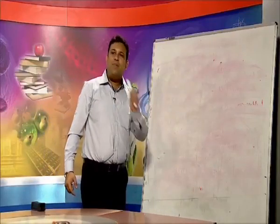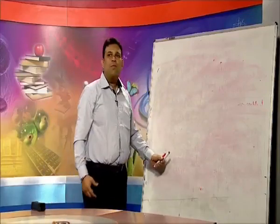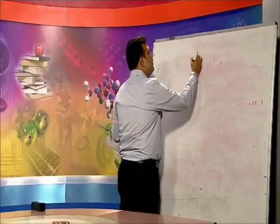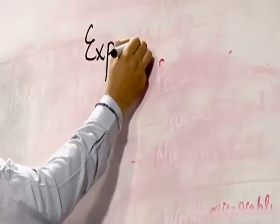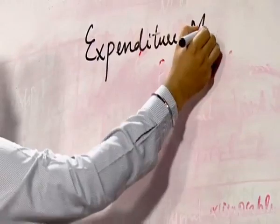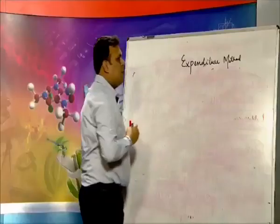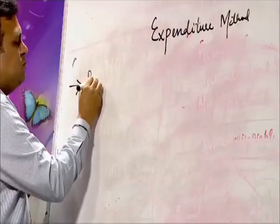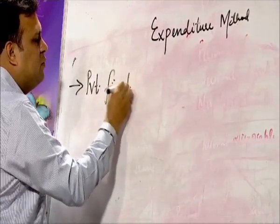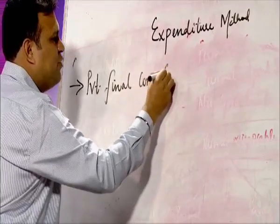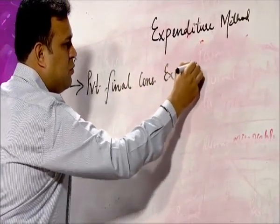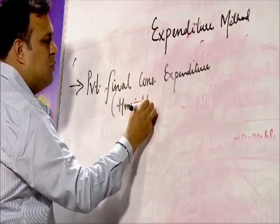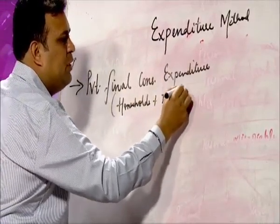All components of the expenditure method will give you the value of GDP at MP. In the expenditure method, we have private final consumption expenditure — it is the expenditure of households plus non-profit institutions.